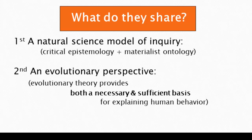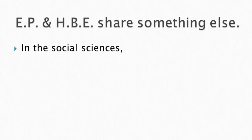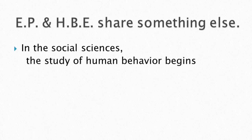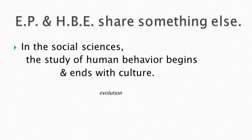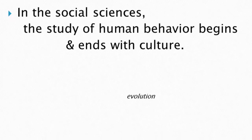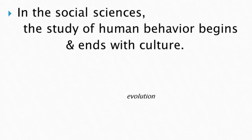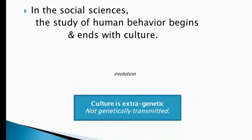The argument is that all we need is evolutionary theory as developed in biology to explain human behavior. Evolutionary psychology and human behavioral ecology also share an opposition to the social sciences and what's called the standard social science model, in which the study of human behavior begins and ends with culture, and evolution has a very small role.